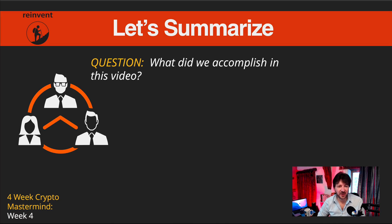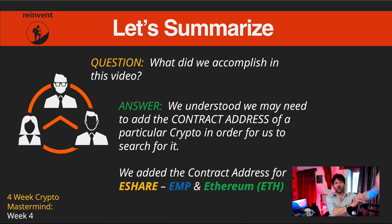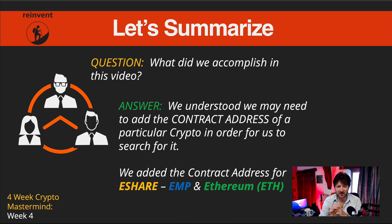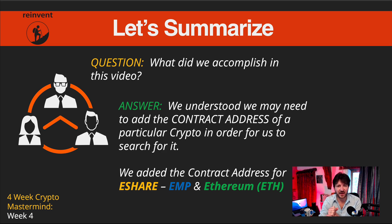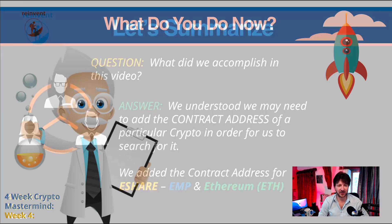Let's summarise. We understood that we may need to add the contract address of a particular crypto in order to search for it on PancakeSwap, and you saw me do exactly this for eShare and for EMP. I didn't actually do it for Ethereum — it was already in my PancakeSwap — but if Ethereum is not shown for you, go and add the Ethereum contract address. I'll add all three contract addresses below this video if you just want to copy and paste them.